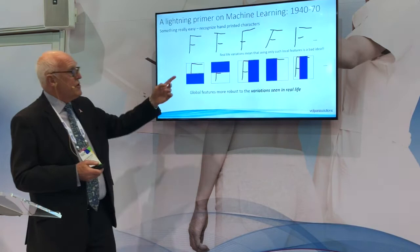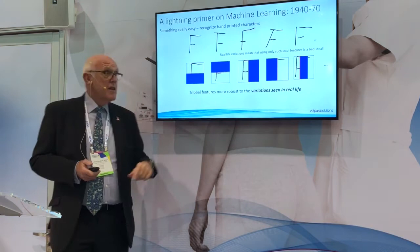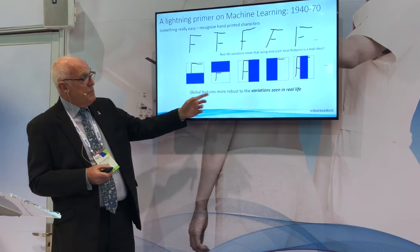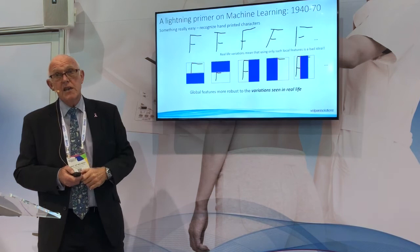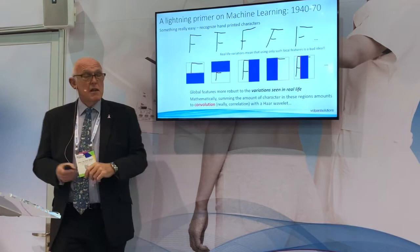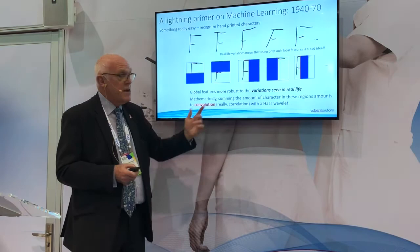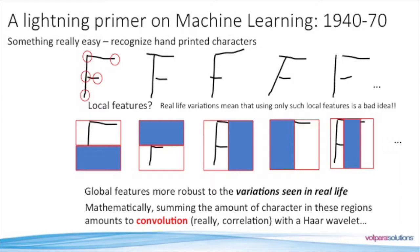What else could we do? You can blank out regions and measure how much content there is in the top, or the bottom, or the left, or the right — features that are much more robust to the real-life variations. Mathematically, this amounts to computing the transform of each character using something known as a convolution — in this case, with the Haar wavelet. Convolution has been around in machine learning since 1962.